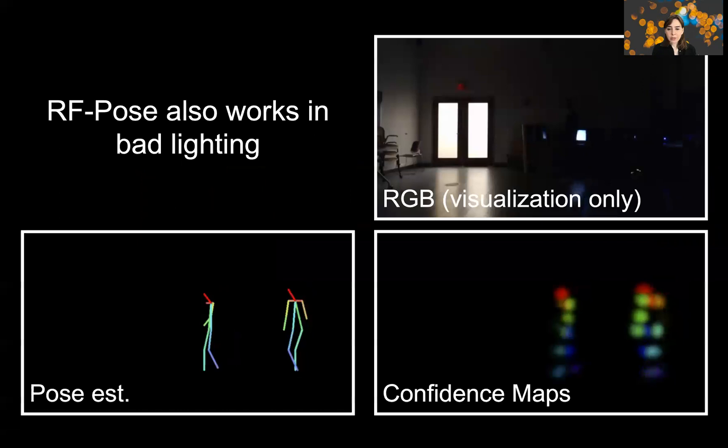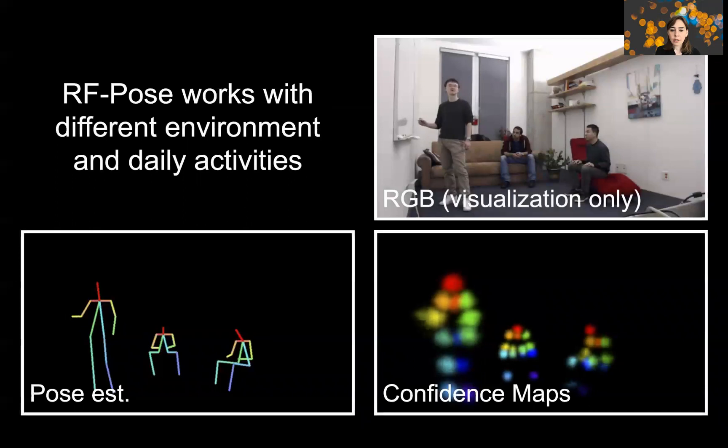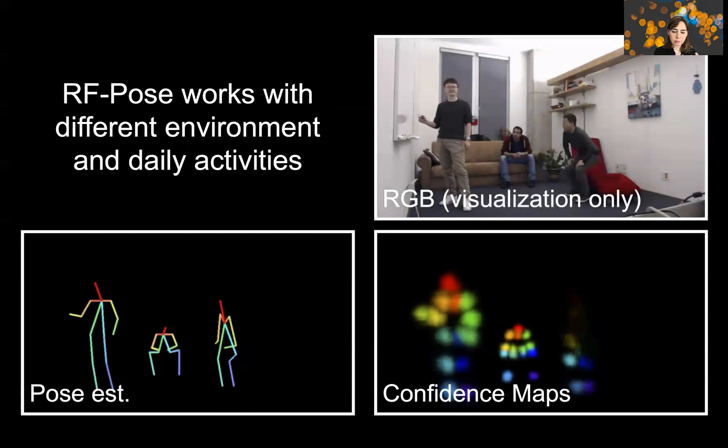And because radio signals do not care about lighting, you can capture this information in dark scenarios, as well as capture different types of postures. Here you see somebody writing on the wall, people are sitting, and one of them stands. You can capture all of these poses purely using radio signals.